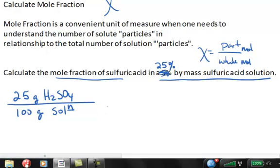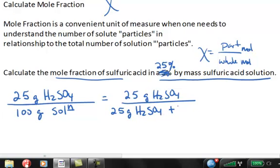All right, that's implied here. So then if I'm going to get it into units of parts of moles per whole of moles, then what I need to recognize is that I'm going to have 25 grams of sulfuric acid. And my solution is really the sum of the acid and the water. So I have to separate those parts out. So that's 25 grams of sulfuric acid plus 75 grams of water, the solvent.